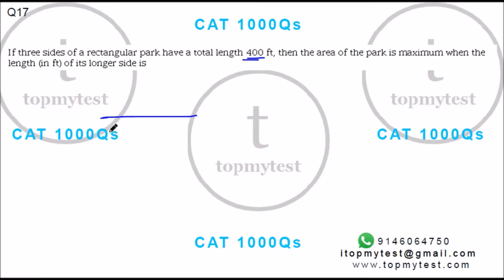Let's set this up. You have three sides of a rectangular park, so if I put this as a, this as B, and this as a again, now it says the sum of the three sides is 400, so 2a plus B equals 400.